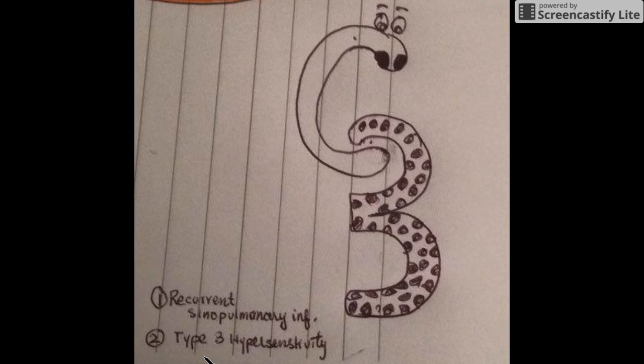Why type 3 hypersensitivity? Because when there will be no C3, there will be no C3b. And as we all know that C3b is an important factor for opsonization, so when there will be no C3b, the immune complexes will remain in the body.